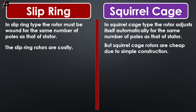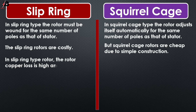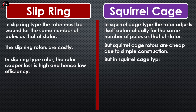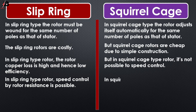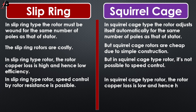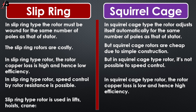In slip ring type rotor, the rotor copper loss is high and hence efficiency is low. In squirrel cage type rotor, speed control is not possible, whereas in slip ring type rotor, speed control by rotor resistance is possible. In squirrel cage type rotor, the rotor copper loss is low and hence efficiency is high.